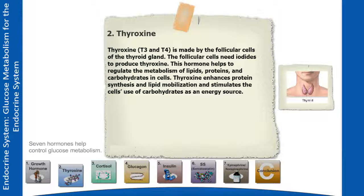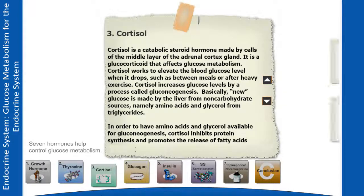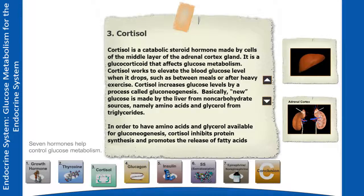Thyroxine is made by the follicular cells of the thyroid gland. The follicular cells need iodides to produce thyroxine. This hormone helps to regulate the metabolism of lipids, proteins, and carbohydrates in cells. Thyroxine enhances protein synthesis and lipid mobilization, and stimulates the cells' use of carbohydrates as an energy source.